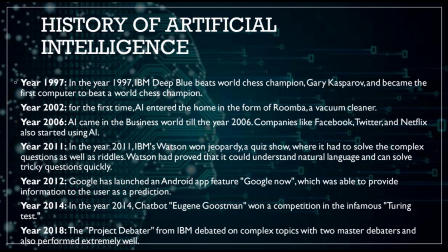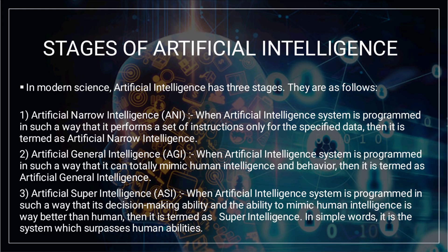Now my friend Siksha will tell you about the stages of Artificial Intelligence. In modern science, Artificial Intelligence has three stages. First, Artificial Narrow Intelligence, ANI — when an AI system is programmed in such a way that it performs a set of instructions only for specified data, it is termed Artificial Narrow Intelligence.